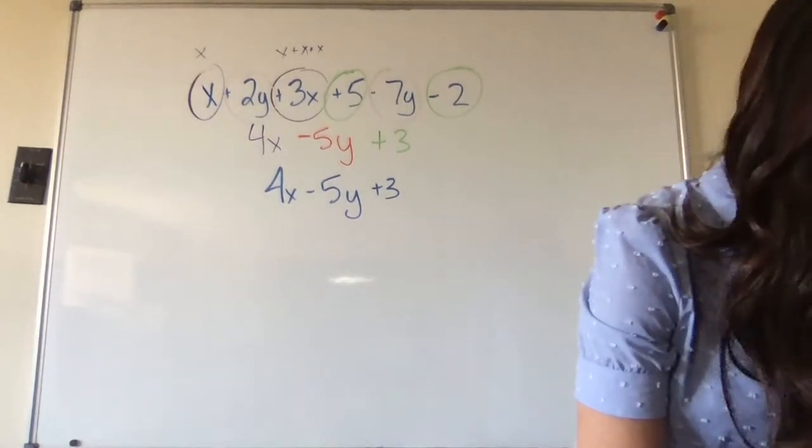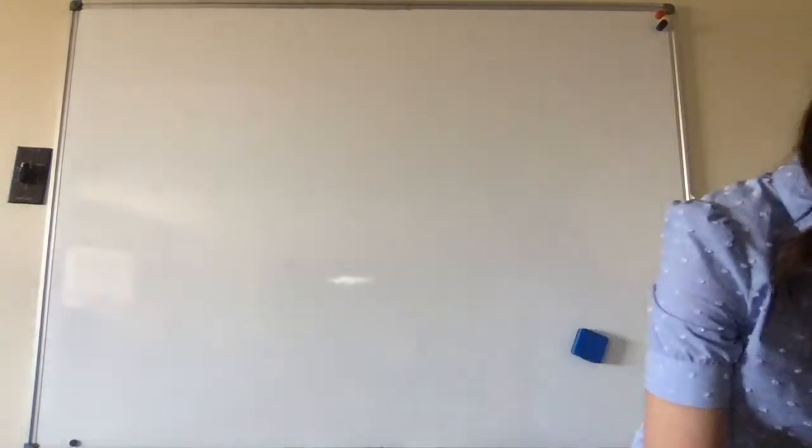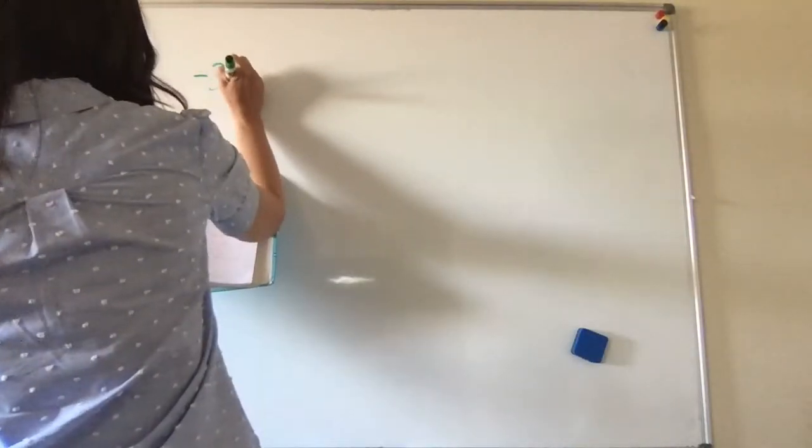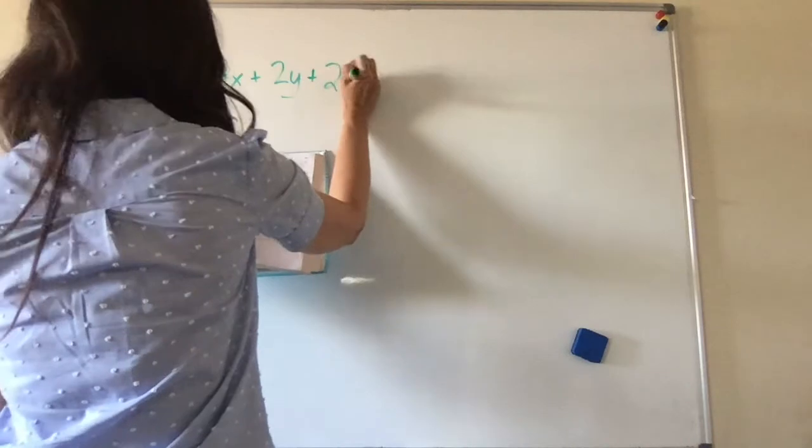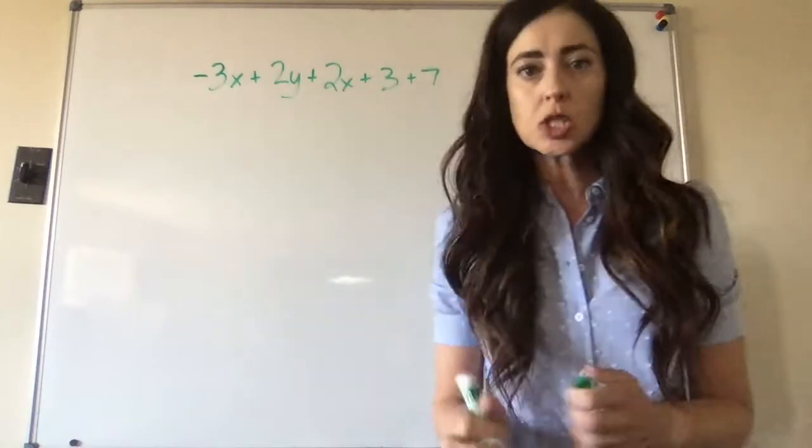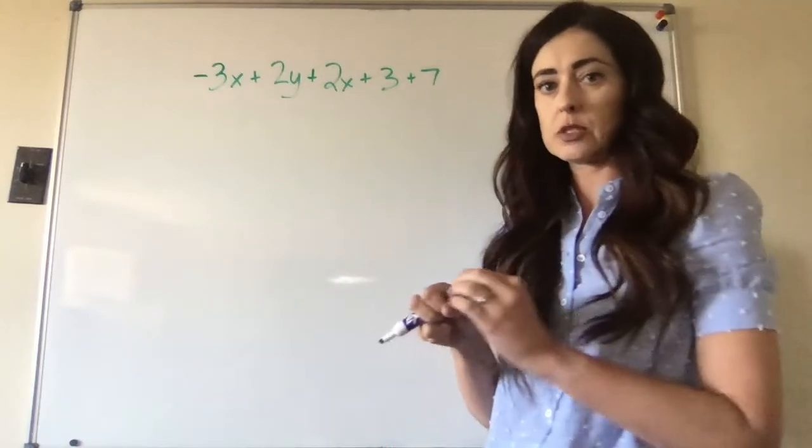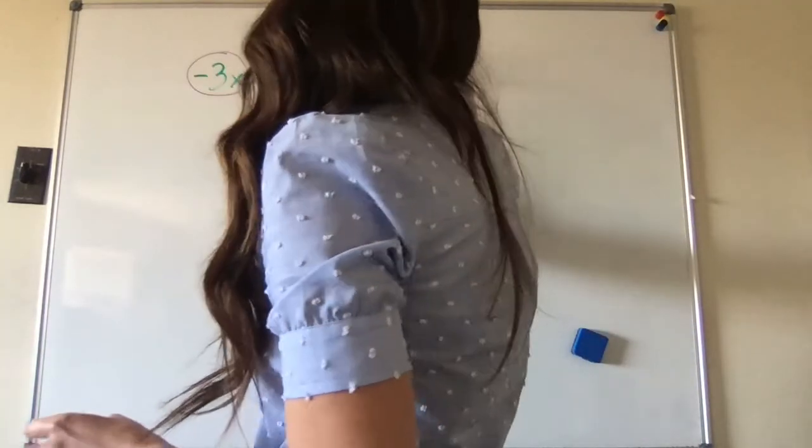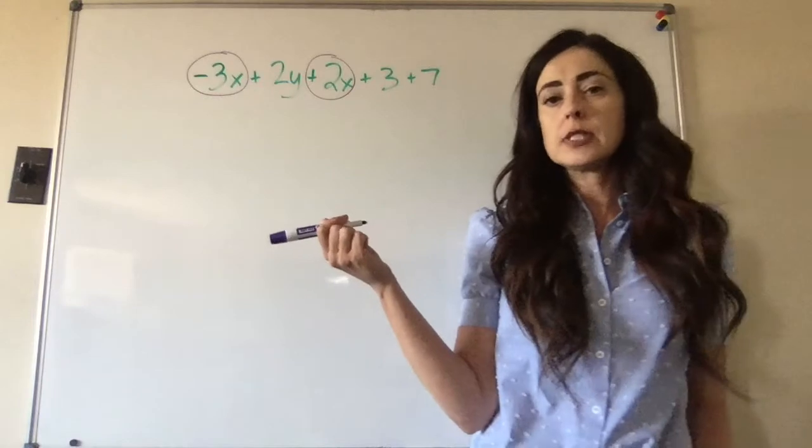So knowing that, we are going to skip ahead on lesson 94 to example 94.1, which says negative 3x plus 2y plus 2x plus 3 plus 7. And so what we're going to do is we're just going to work our way left to right, identifying the different terms and adding like terms. So first, we're going to circle all of our x's.